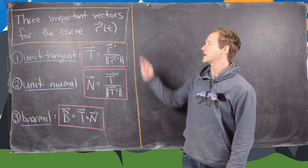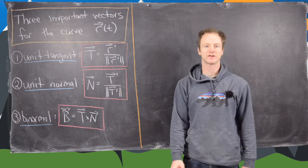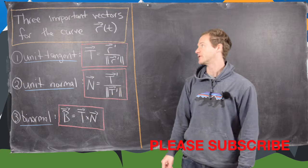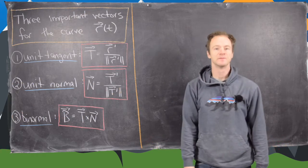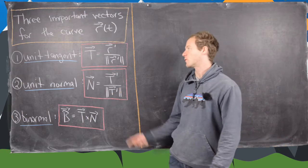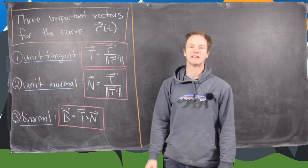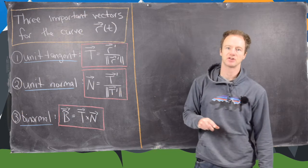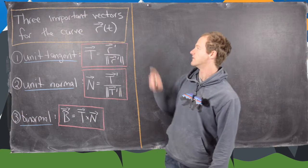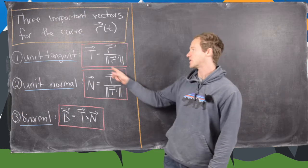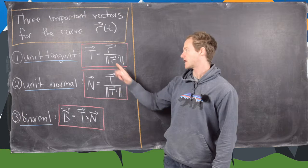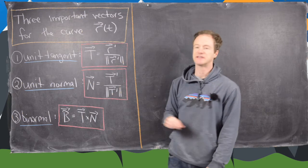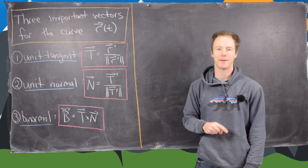In this video we want to look at three important vectors associated with a vector definition of a curve r of t. The first one is the unit tangent vector. We can get a tangent vector by taking the derivative of the curve, and then turn it into a unit vector by dividing by its length. We'll call that the unit tangent vector capital T.